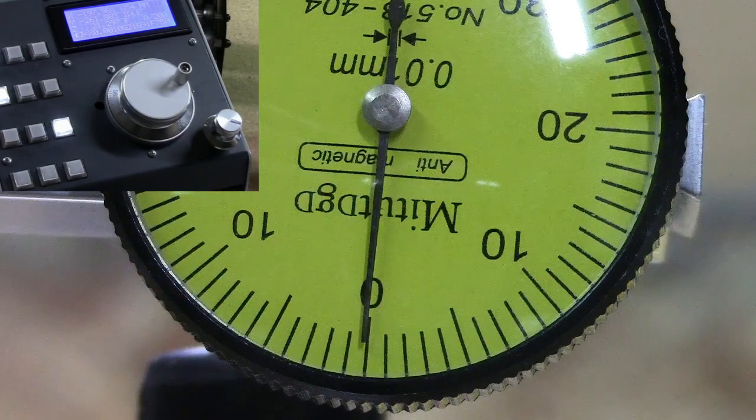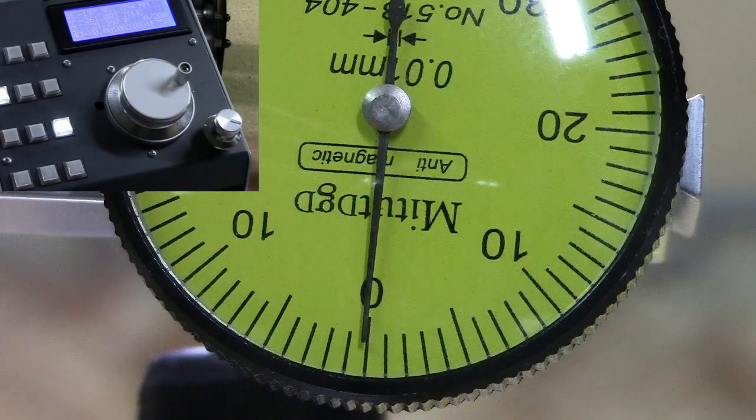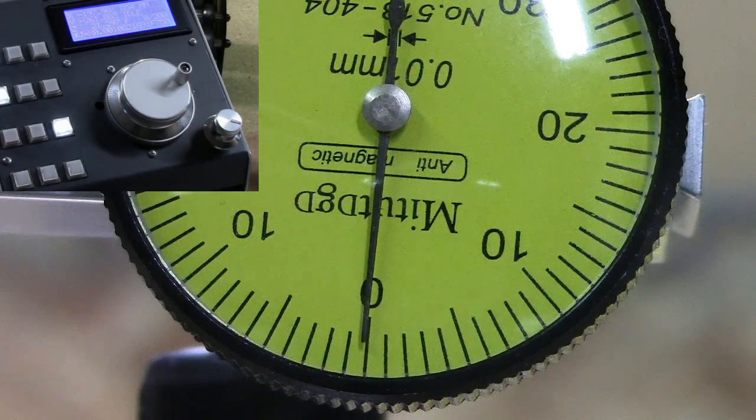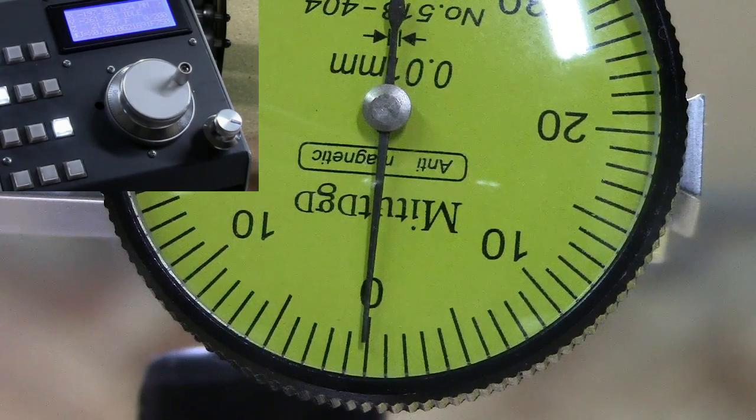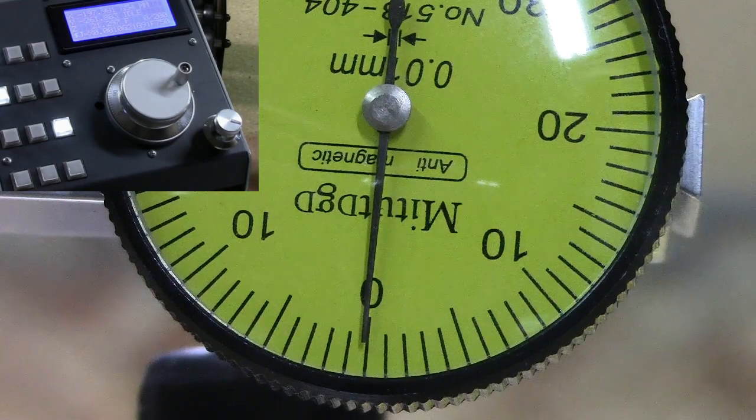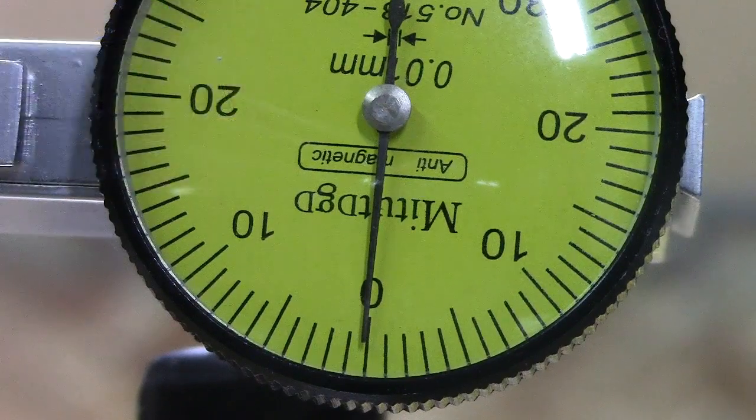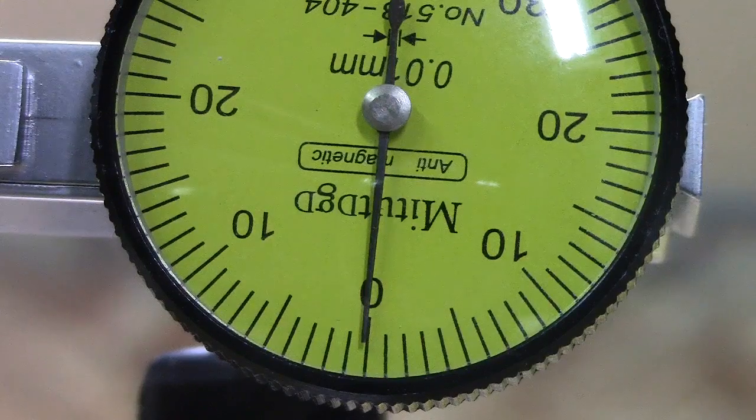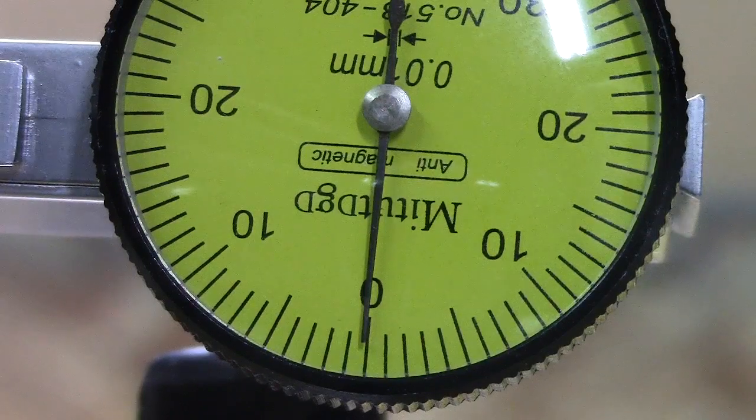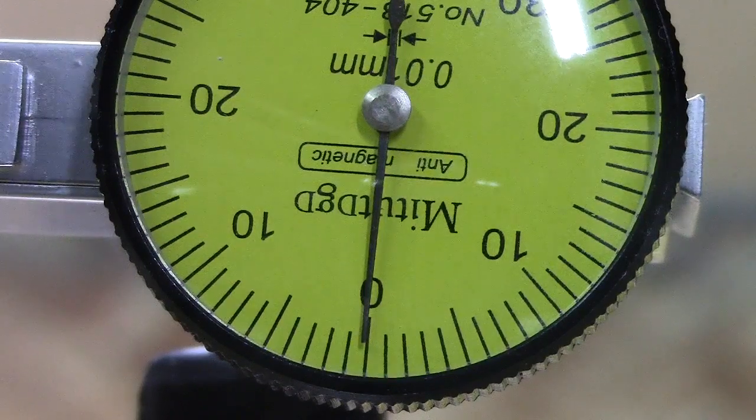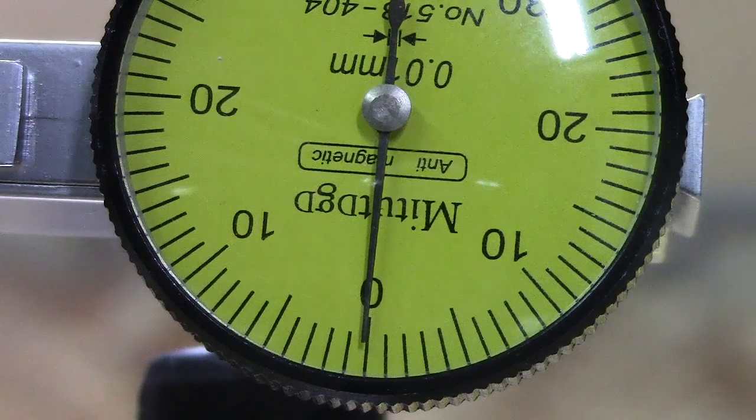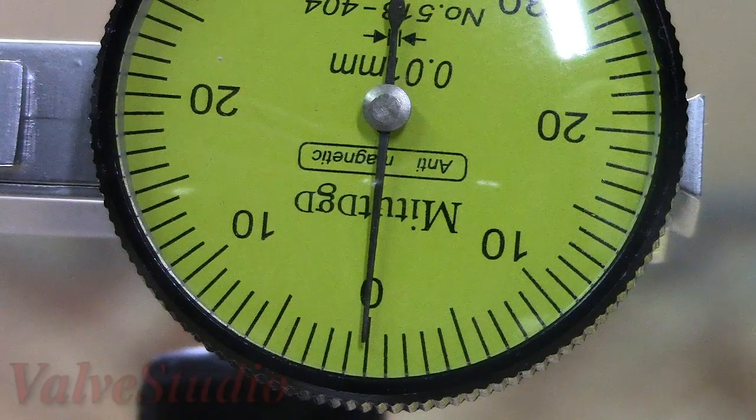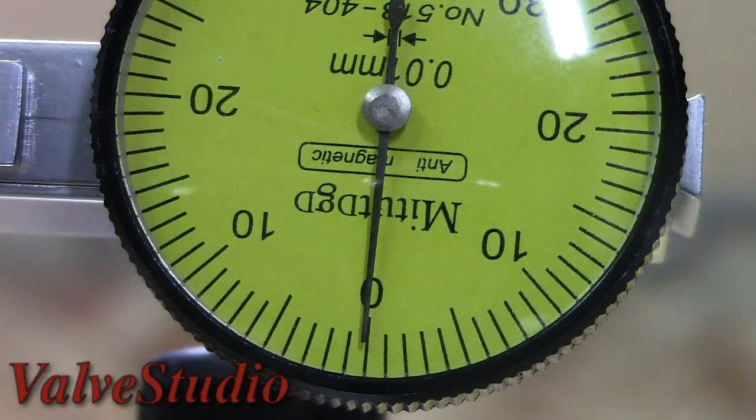Now this doesn't include all the play in the axis when it's moving and all that stuff. This is just a rudimentary positioning test. But from these results here, me achieving a tenth of a millimeter would be wildly successful, but I'm seeing a thousandth of a millimeter. You tell me what I'm doing wrong. All right, thanks for watching, this is the Valve Studio.